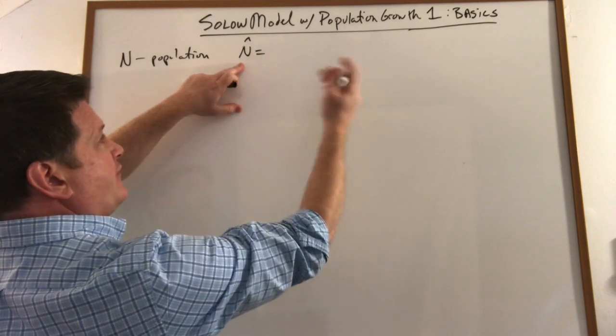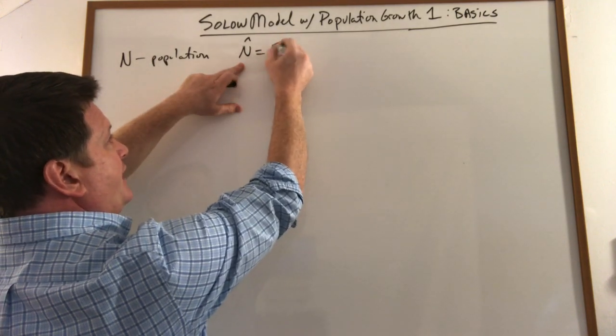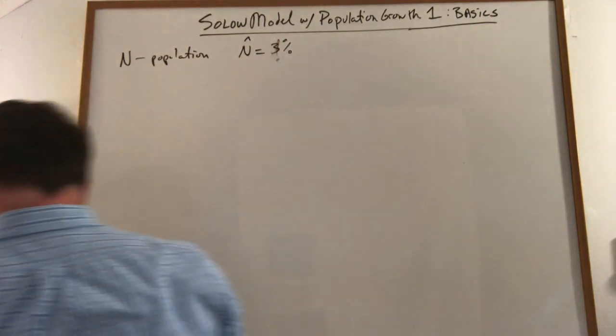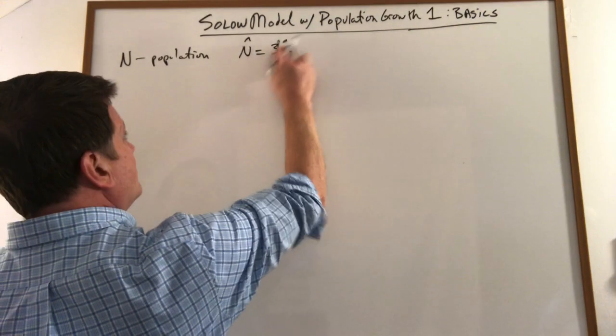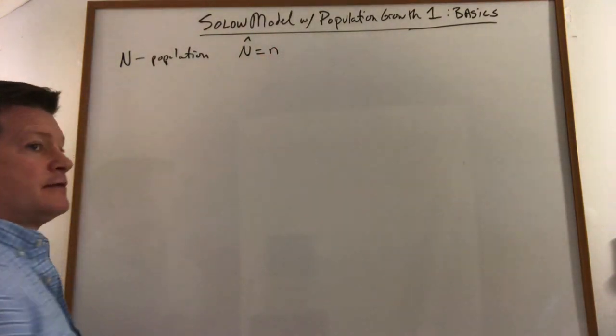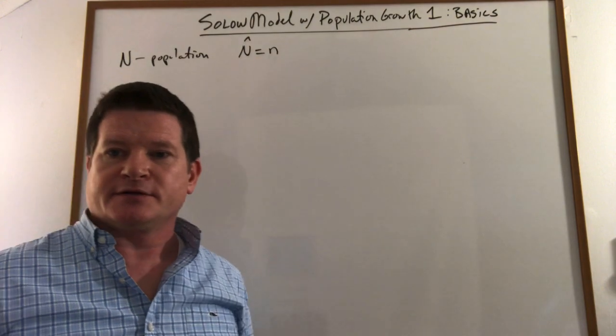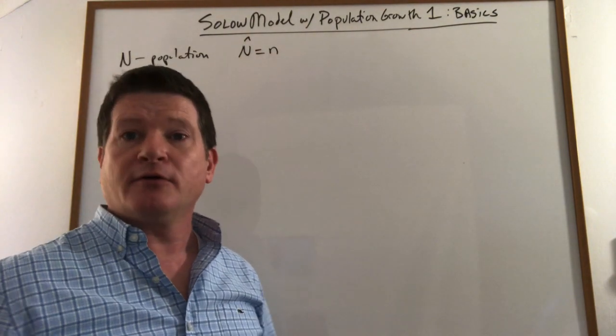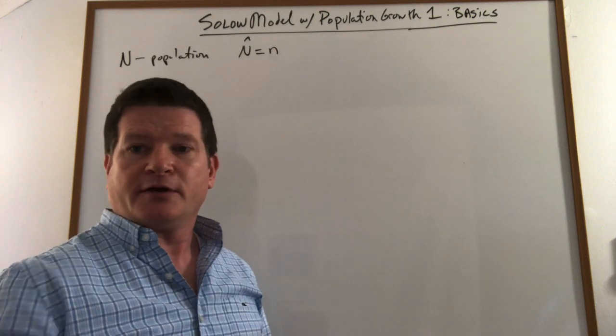This could be growing at 5% or 3% whatever we want and so it's easiest just to say N. It's growing at some constant rate N and whatever that is. It's not zero or it could be zero if you want to look at no population growth.